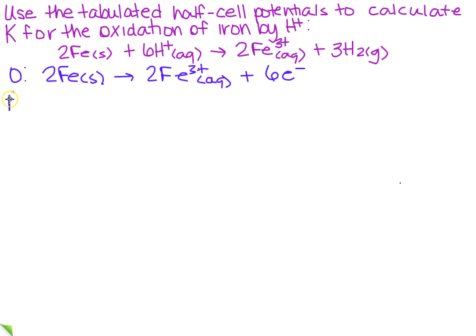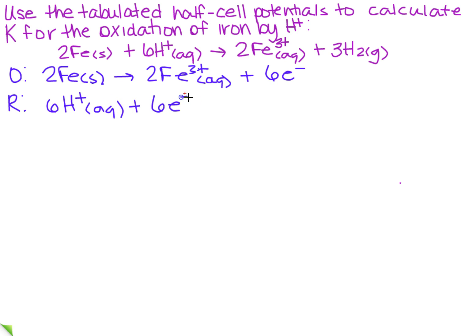Then I need to look at the reduction, so the electrons are going to be on the left because it's the more positive side. So I've got 6H⁺ plus 6 electrons goes to 3H₂ gas.